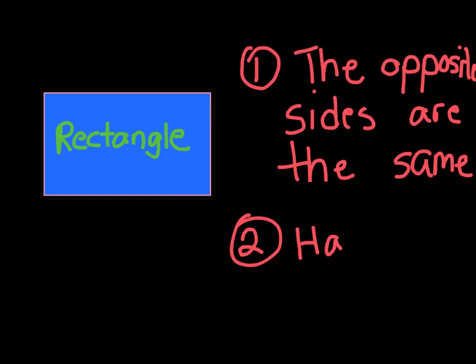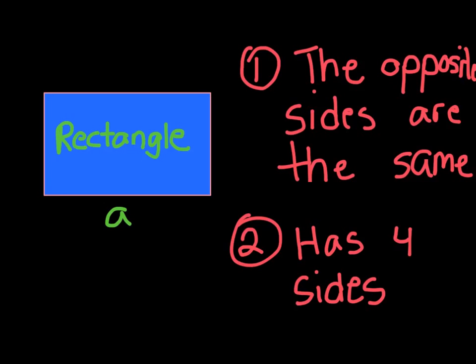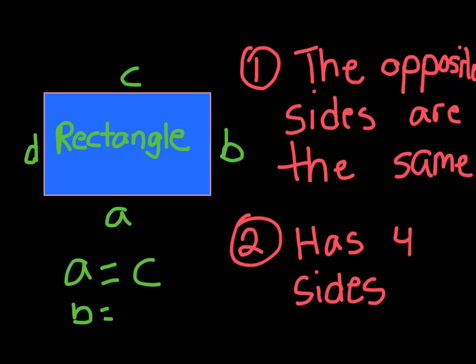The second rule is that it has four sides. Regarding rule one, when I said that the opposite sides are the same, let's label the corners A, B, C, and D. What I mean is that A and C are equal to each other, and B and D are opposite to each other, meaning B is equal to D. That's exactly what a rectangle is.